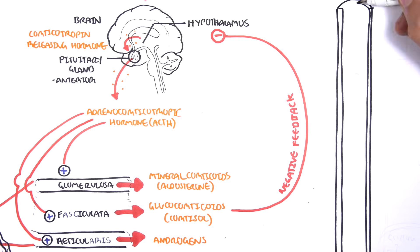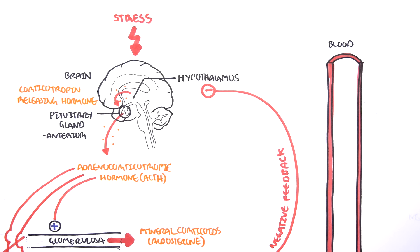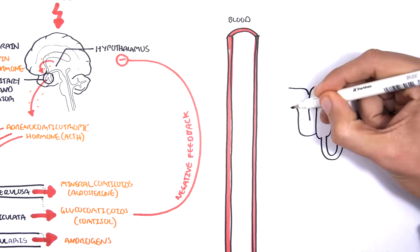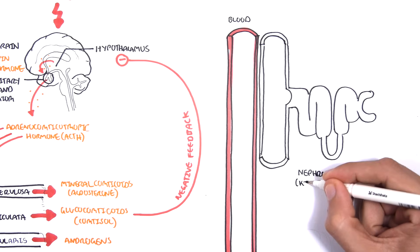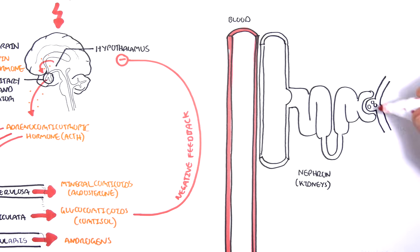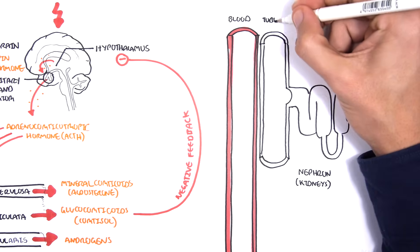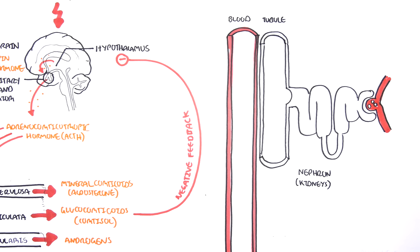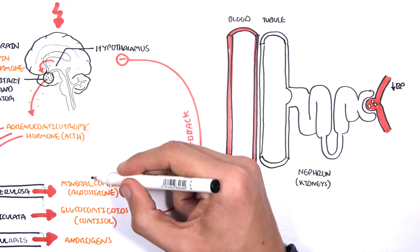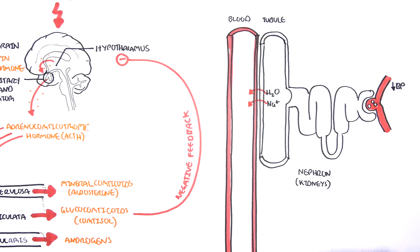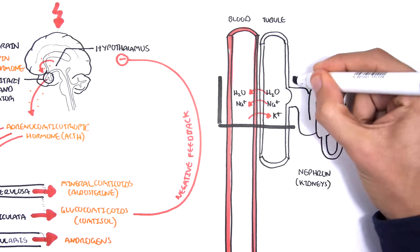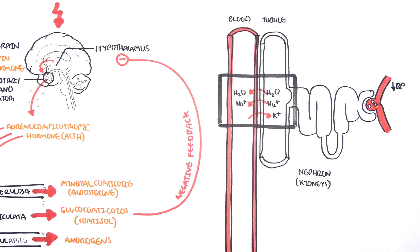To understand mineralocorticoids, we need to know about the kidneys and their functional units called nephrons. The nephrons are responsible for filtering, reabsorbing, and secreting things from our body, and thus have a major role in controlling blood pressure. When there is a decrease in blood pressure, the kidneys reabsorb water and sodium back into the blood, and secrete potassium in exchange. Aldosterone, secreted by the zona glomerulosa, stimulates this process, thereby increasing blood pressure.